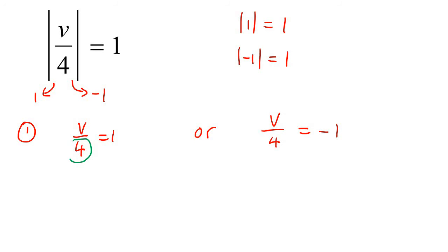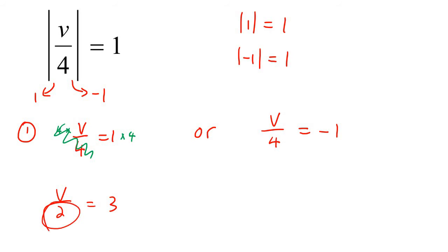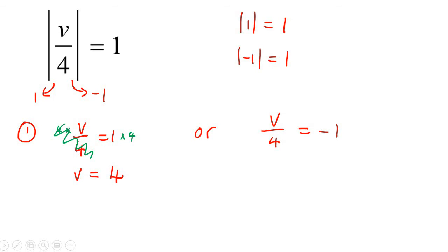Now we just solve to get v by itself. If you have a 4 at the bottom, you multiply both sides by 4 to get rid of it. On the left you'll have v, and on the right you'll have 4. For the second case, multiply both sides by 4 as well — those cancel out — giving v equals negative 4. Those are the two answers for this question.